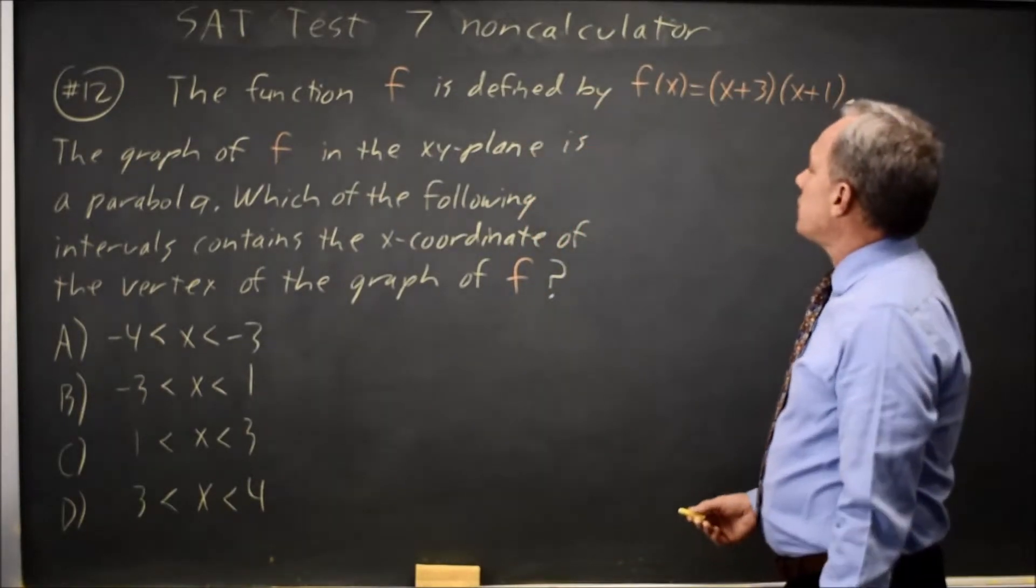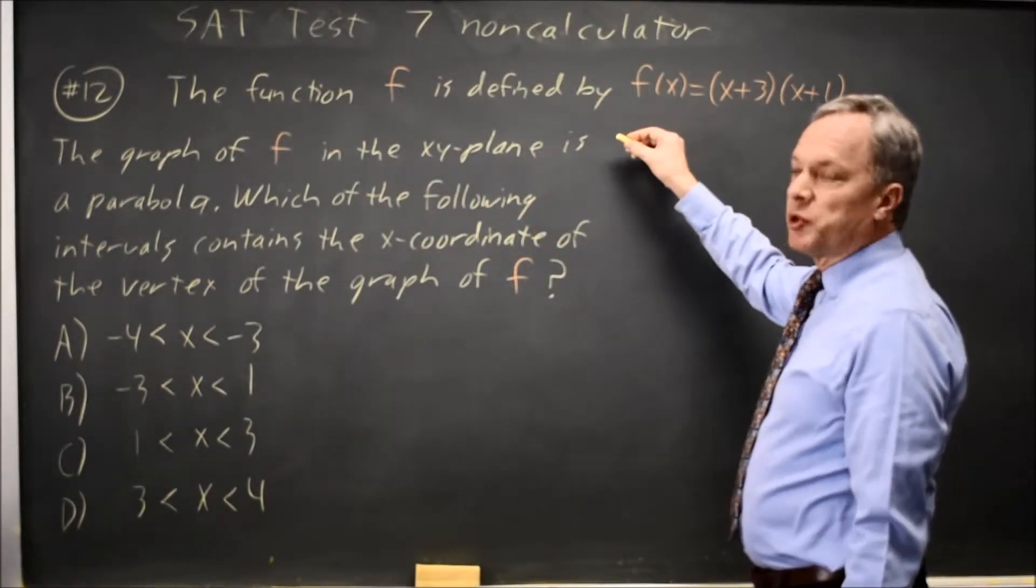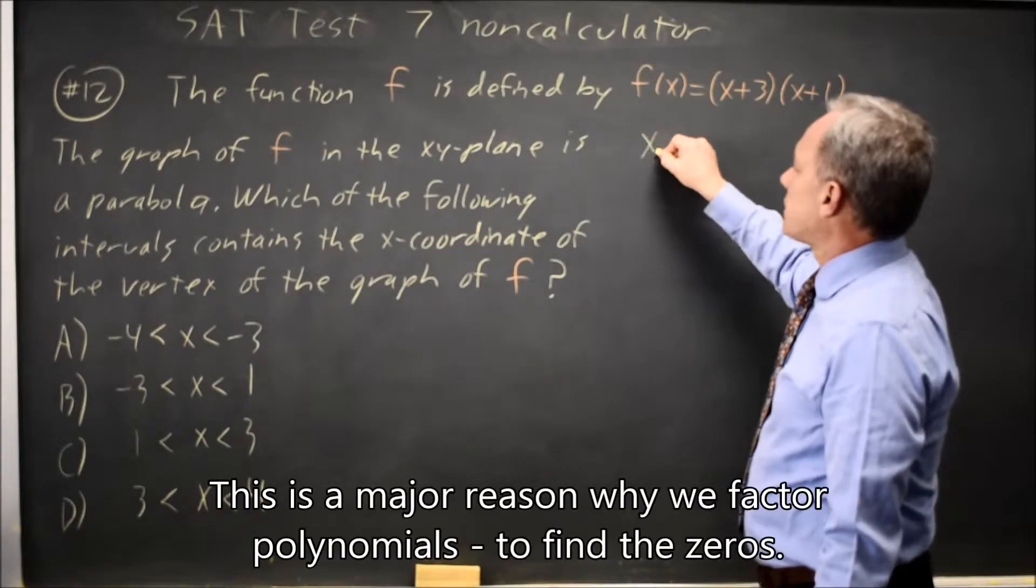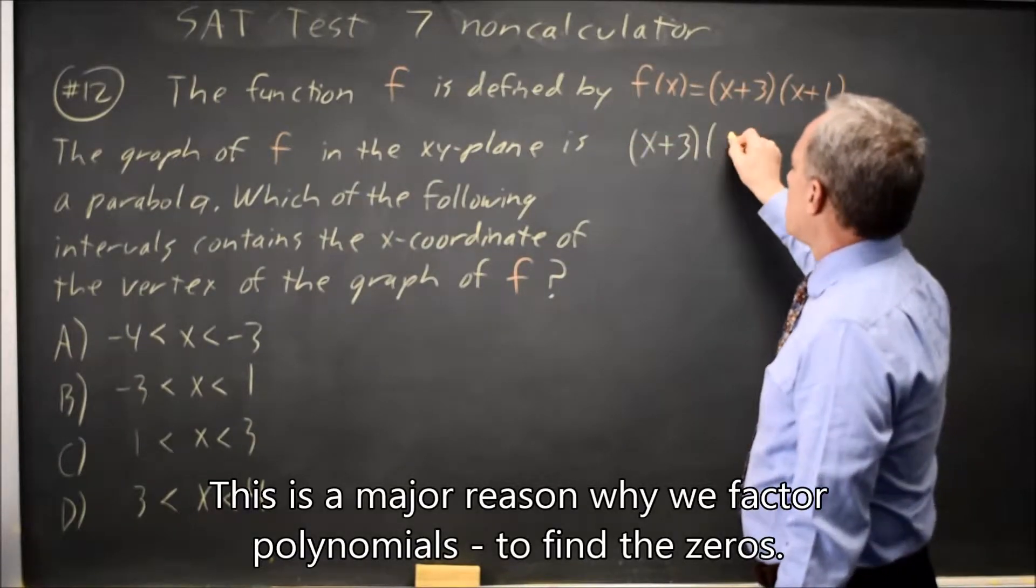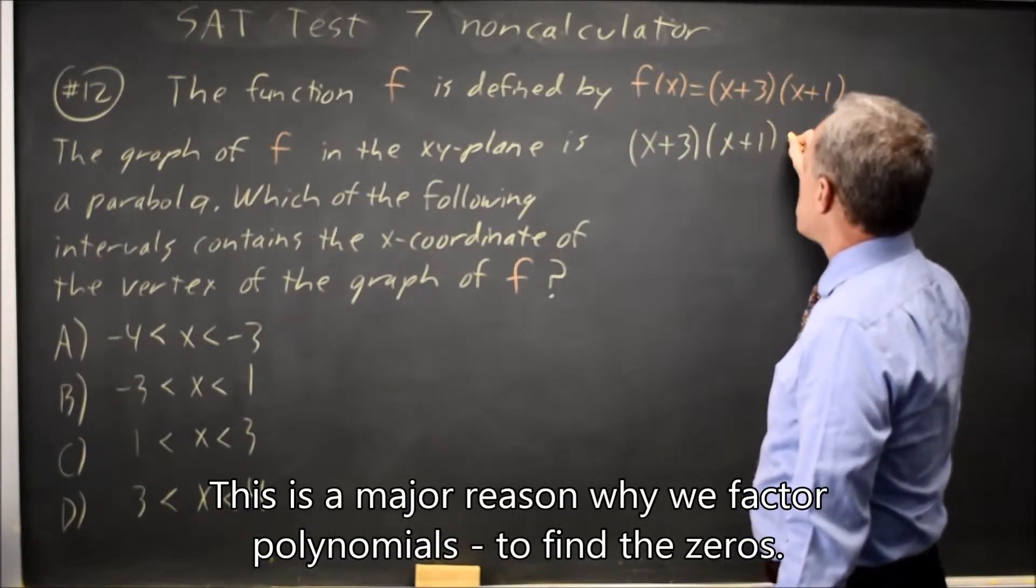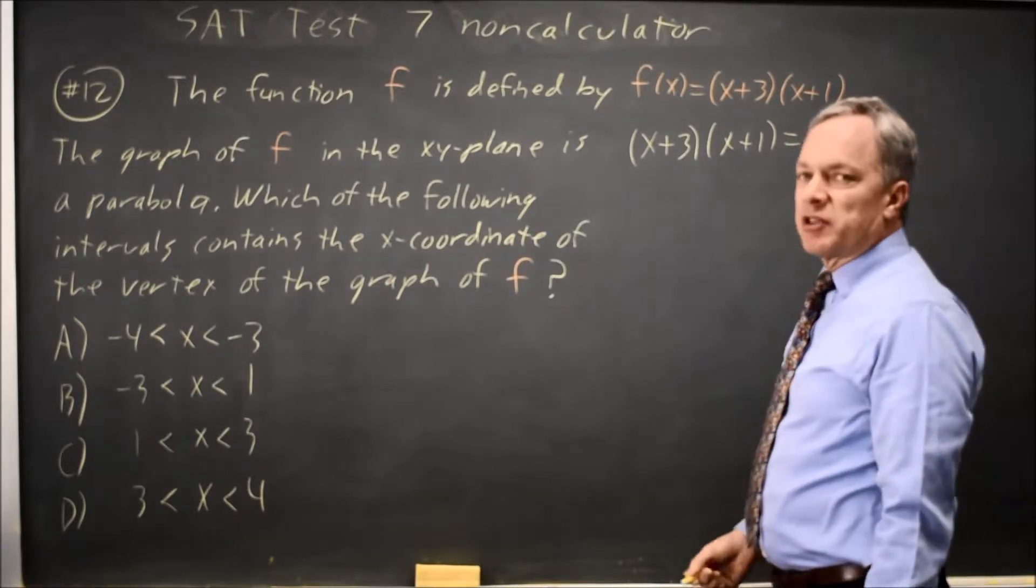To find the vertex, that will be midway between the two zeros. So set (x+3)(x+1) equals 0. If that product is 0,